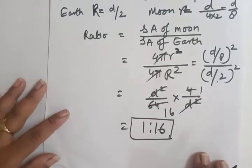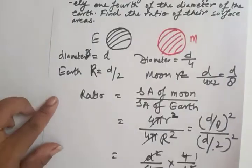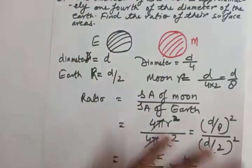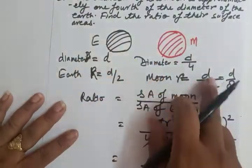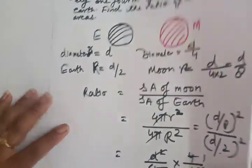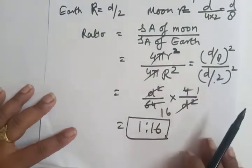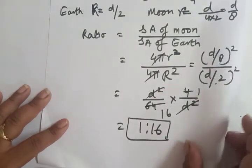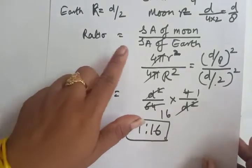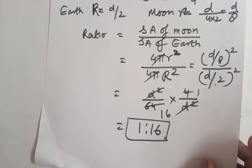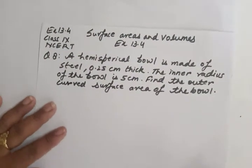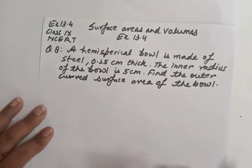So first we take the diameter of the earth as d, then per the question the moon's diameter is d/4. We put values into the formula and we get the ratio of surface area of the moon to the surface area of the earth as 1:16. Now proceed to Question Number 8 of Exercise 13.4, Class 9.